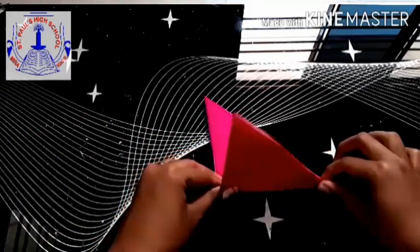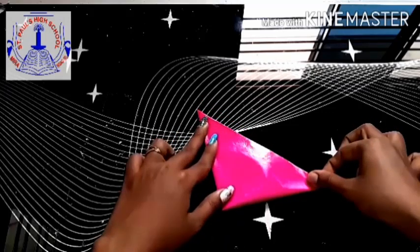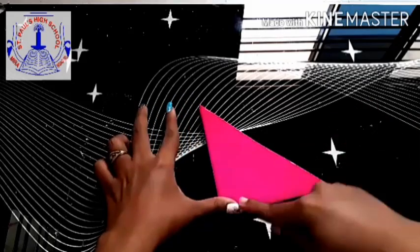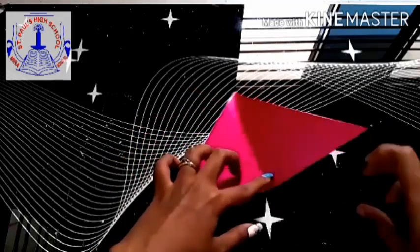Again, fold your paper into half, small triangle. Crease it well. Unfold it.